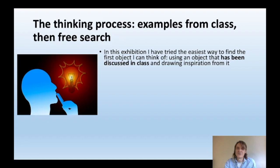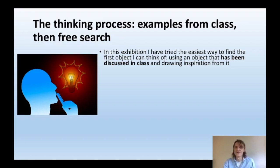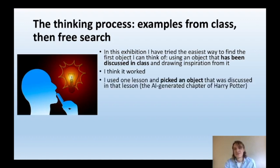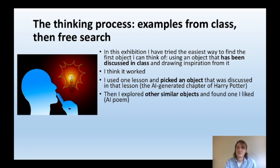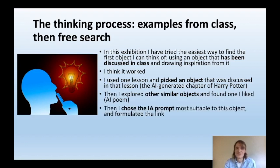On reflection, this has been the easiest way to find the first object so far, compared to my first two exhibition samples. I used one lesson, I picked an object discussed in that lesson — the AI-generated chapter of Harry Potter — then I explored other similar objects and found one I liked: the AI poem. Then I chose the IA prompt most suitable to this object and formulated the link.